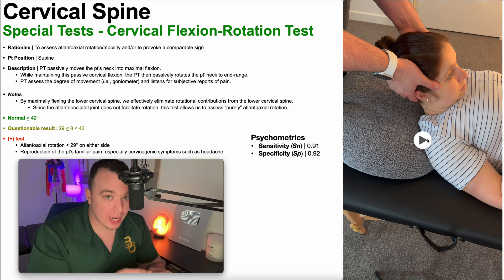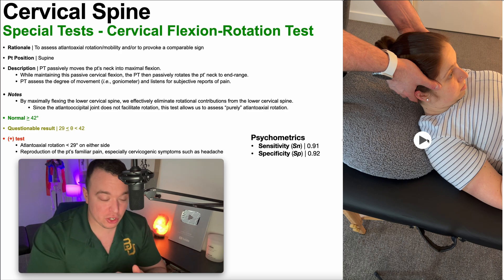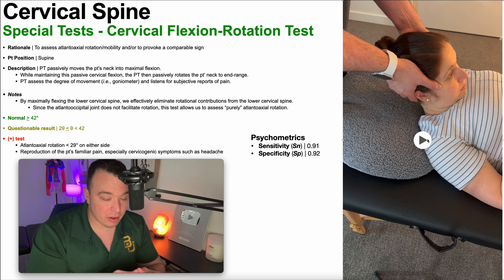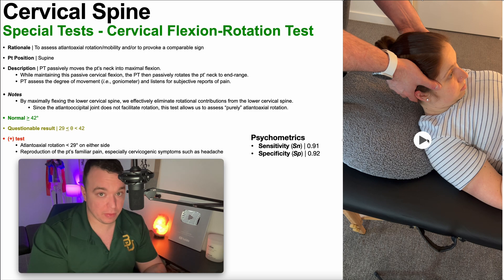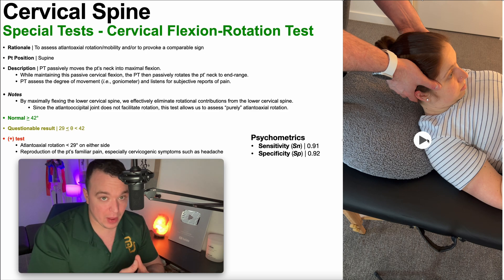That joint really participates in rotation. In fact, about half of the rotation of the entire cervical spine is accomplished through the atlanoaxial joint.